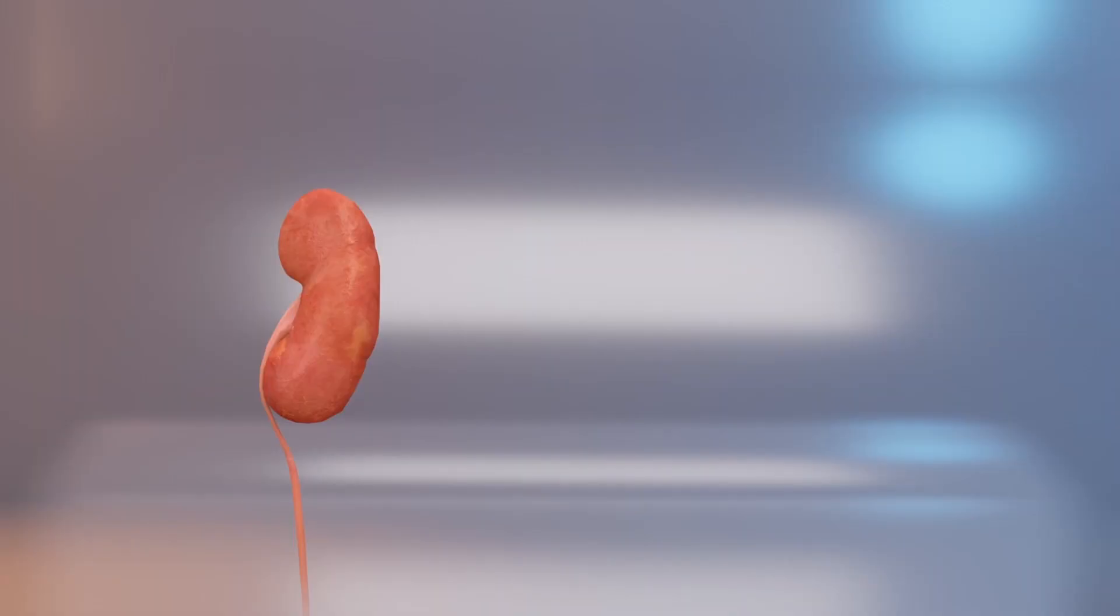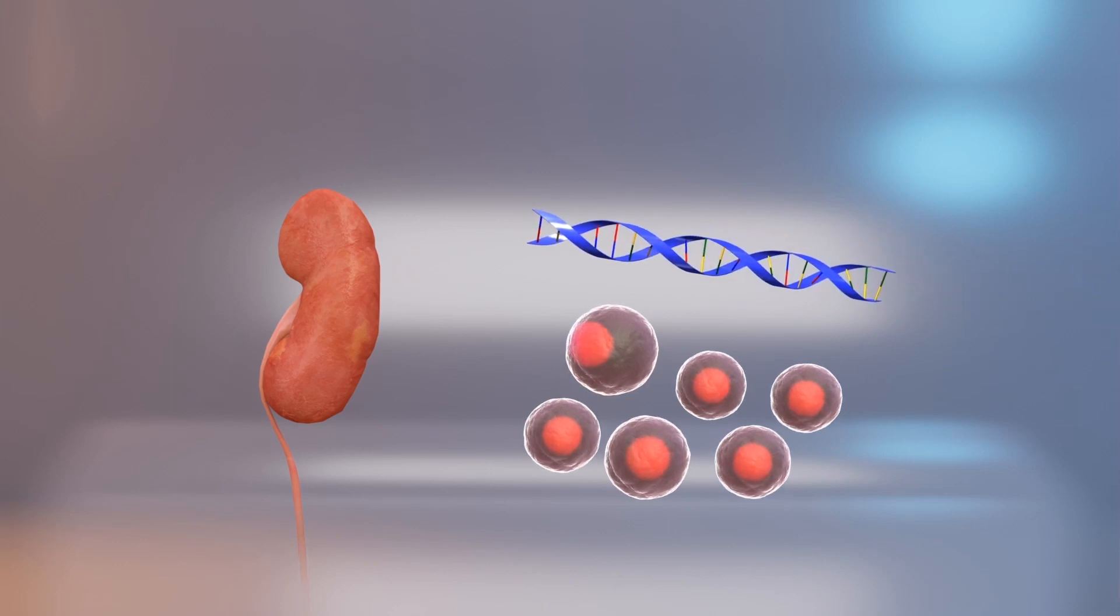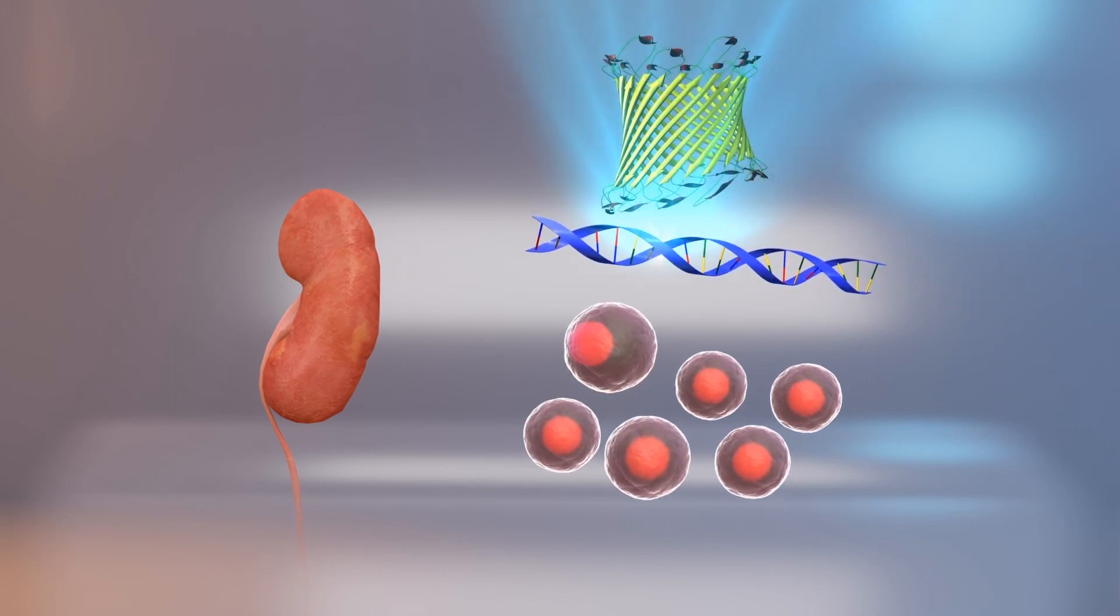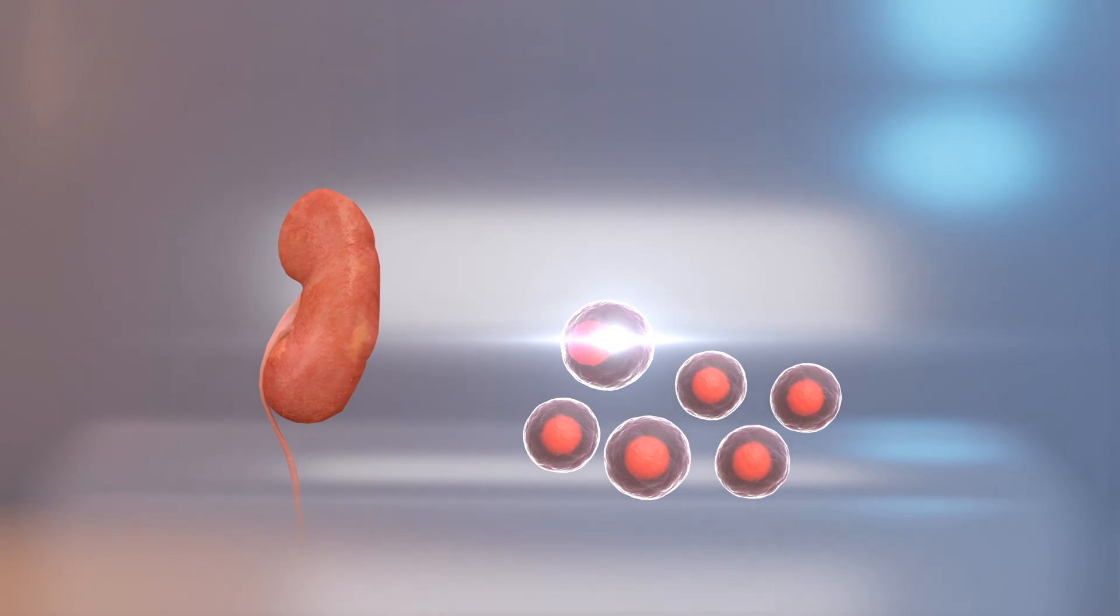In a news release, the scientists say they took human embryonic kidney cells and introduced genes that express reflectin. These cells are then cultured and examined under a microscope.